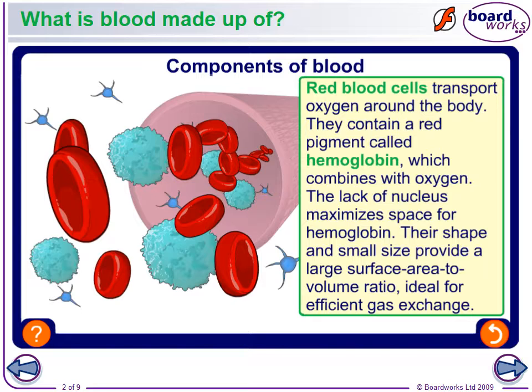There's a family called the Blue People of Troublesome Creek. They have what is called methemoglobinemia. These people are deficient in iron, so the hemoglobin can't bond with oxygen because it needs that iron component. They're getting less oxygen, and at higher altitudes they actually have a blue cast because they're missing the oxygen, especially when they get stressed or cold.